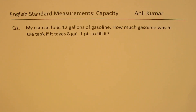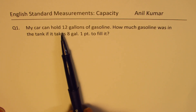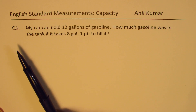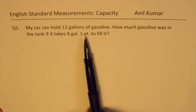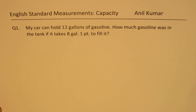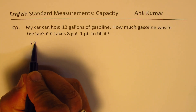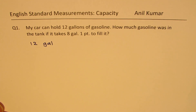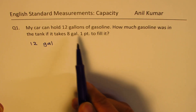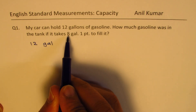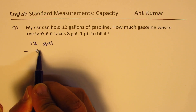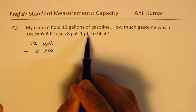Let's begin with the very first question: my car can hold 12 gallons of gasoline. How much gasoline is in the tank if it takes eight gallons one pint to fill it? So basically I have 12 gallons, and if I need to find how much gas was there, I have to take away how much I filled in — I filled in eight gallons and one pint.